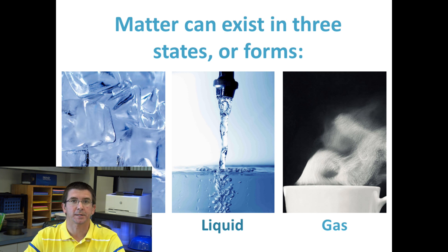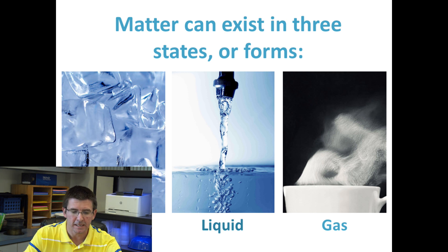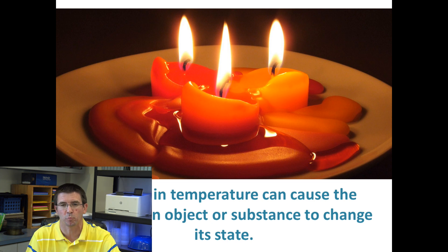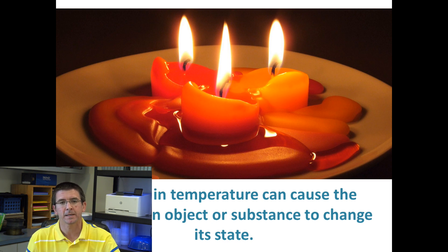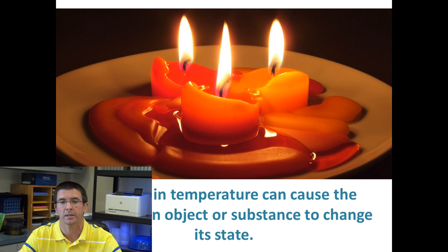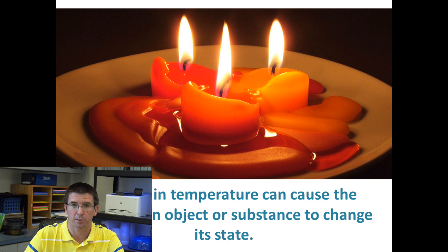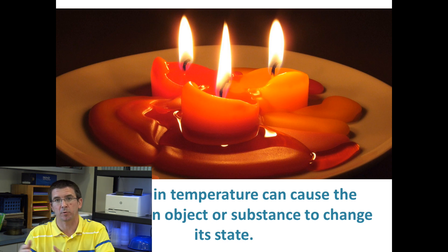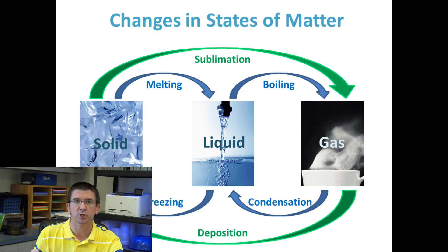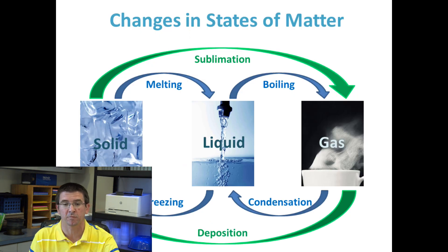We also talk about matter as existing in different states — it can be a solid, a liquid, or a gas. Matter can exist in any of these states and can transition from one to another based on changes in temperature. If we take an ice cube, which is solid, and leave it on the counter, it will warm up and melt, turning from a solid to a liquid. If we put that water in a pot and boil it, it changes from a liquid to a gas.